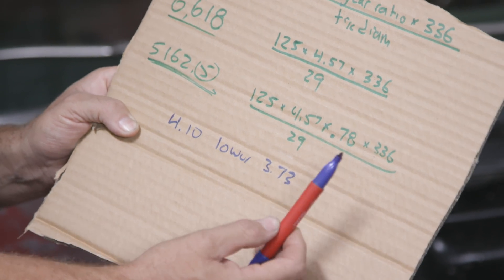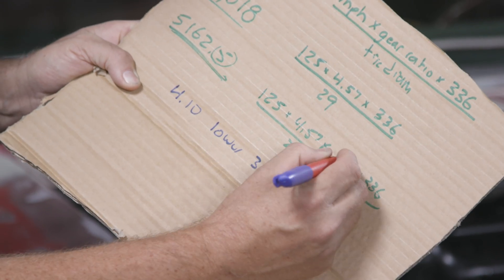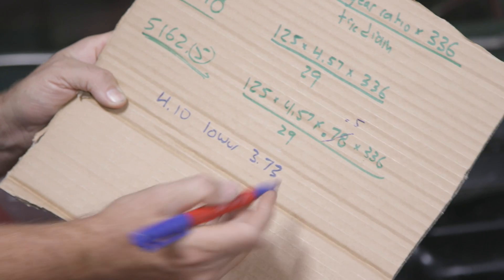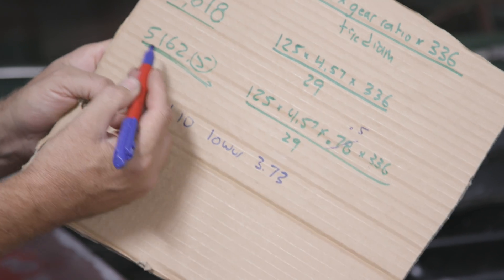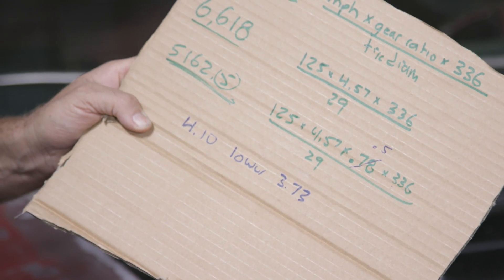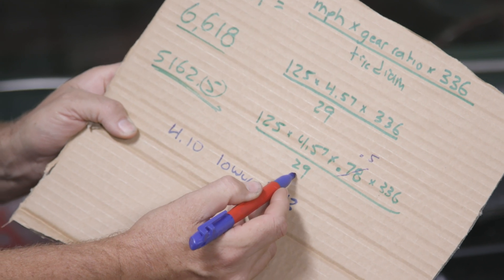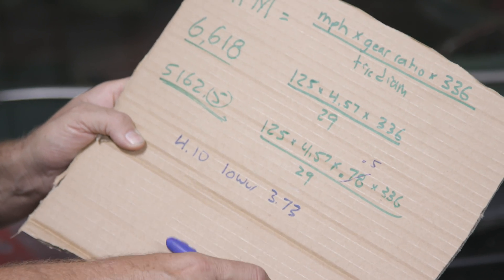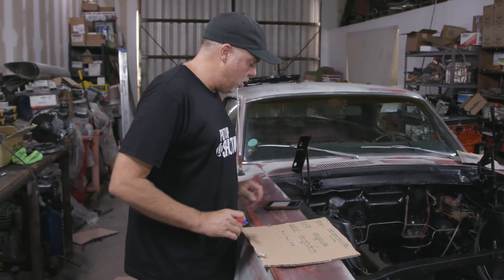Overdrive — obviously the lower the overdrive number, like if it was a six-speed with a 0.5-to-1 overdrive, that is going to lower your RPM at cruise much more than a 0.78. And on tire diameter: the taller the tire, the lower your RPM; the shorter the tire, the higher your RPM. So that's how that all works.